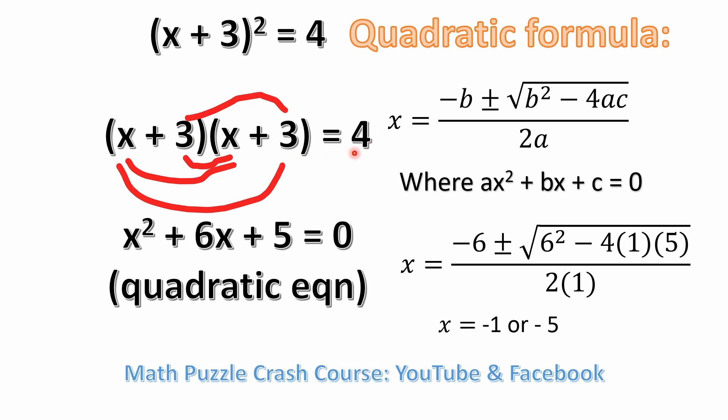And then you could subtract 4 from both sides of the equation, which would give you 0 on the right side. 9 minus 4 is 5. So if you work this out, you're going to end up with this quadratic equation x squared plus 6x plus 5 equals 0.